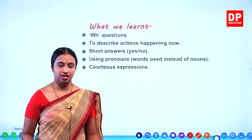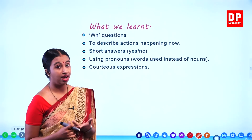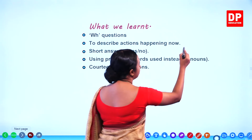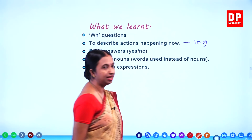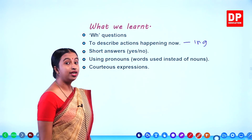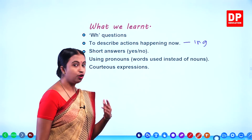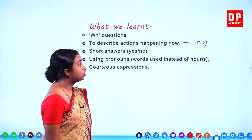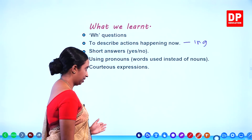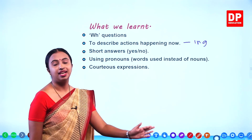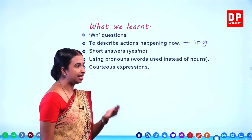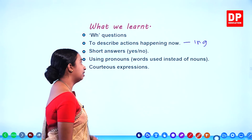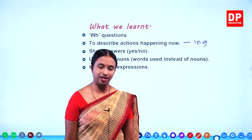What we learnt: WH questions — who, what, when, where, why. To describe actions happening now, we use the ING form. Short answers for yes or no questions — for example, is your friend coming home? Using pronouns — words used instead of nouns. For example, Shehan is running; he is late for class — we use 'he' as a pronoun. Courteous expressions — polite ways of speaking. These are the topics covered in this unit.